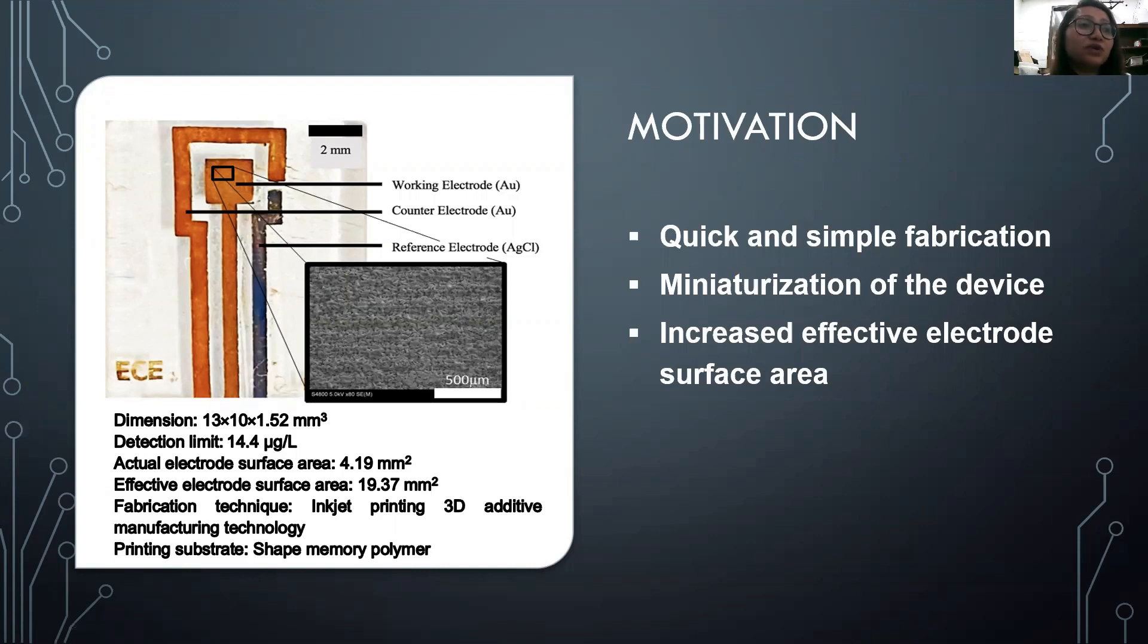Actual electrode surface area is 4.19 millimeter square. Effective electrode surface area is 19.37 millimeter square, even after miniaturizing the device. We have applied inkjet printing 3D additive manufacturing technology on shape memory polymer for fabricating our electrochemical sensor.